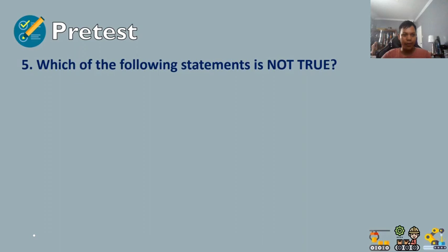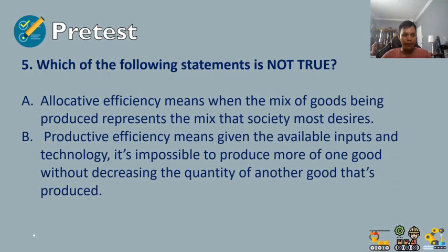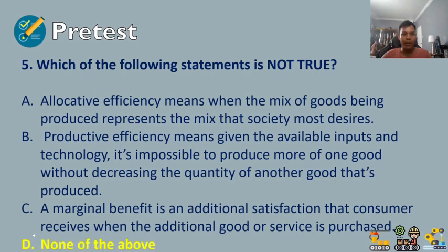Question number five: which of the following statements is not true? A) allocative efficiency means the mix of goods being produced represents the mix that society most desires; B) productive efficiency means, given available inputs and technology, it's impossible to produce more of one good without decreasing the quantity of another good produced; C) a marginal benefit is the additional satisfaction a consumer receives when an additional good or service is purchased; or D) none of the above. The answer is letter D, none of the above — all statements in A, B, and C were true.